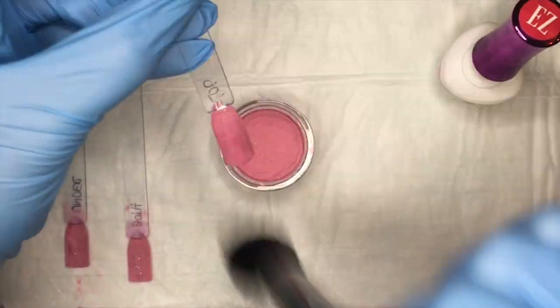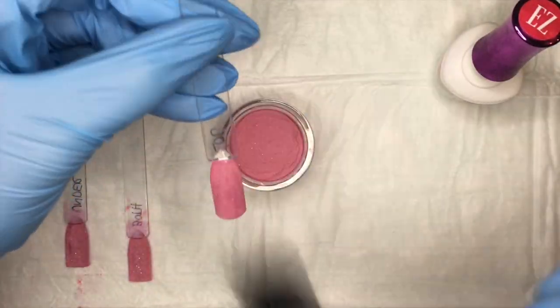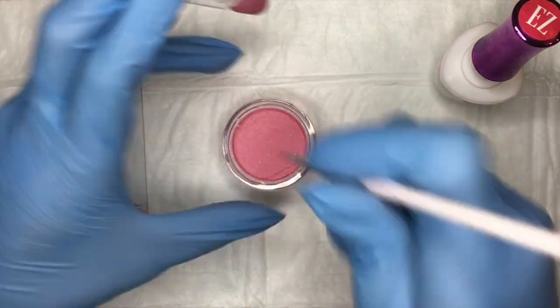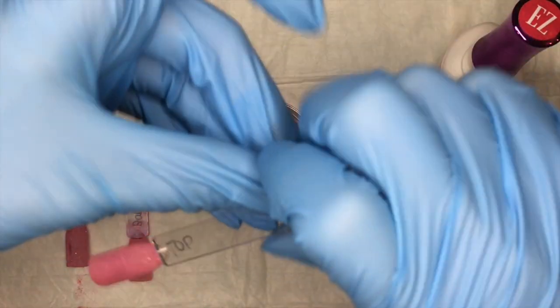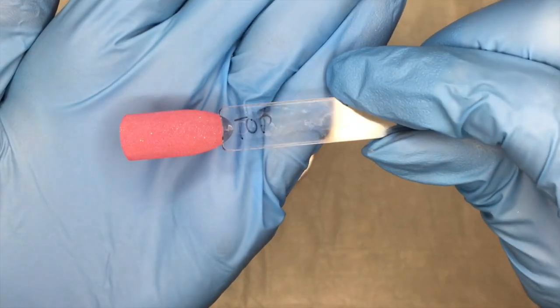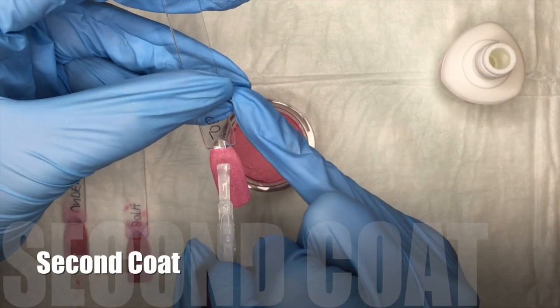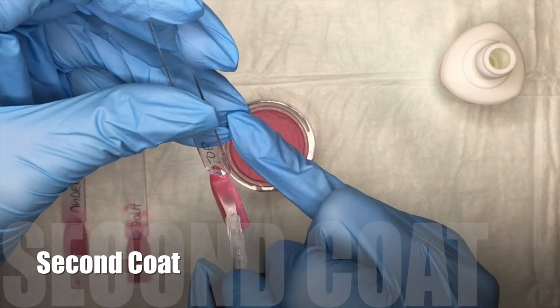So now that the first coat is done, I'm just going to take a fluffy brush as well as a stiff manicure brush. I'm going to dust off all the excess powder and repeat the exact same steps for the second coat. So apply a thin and even coat of probase from the cuticle to the free edge of the swatch stick.